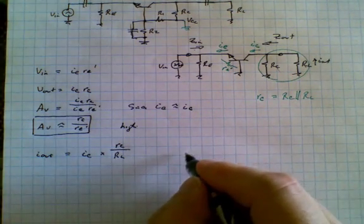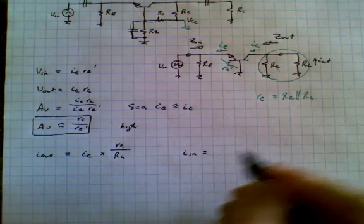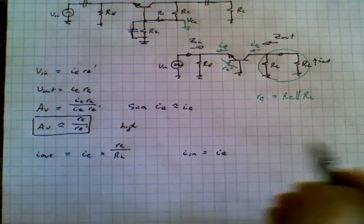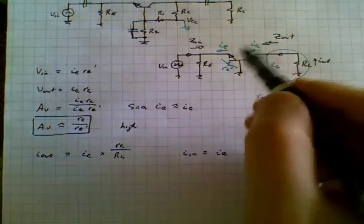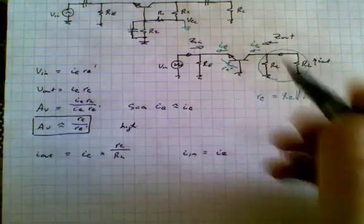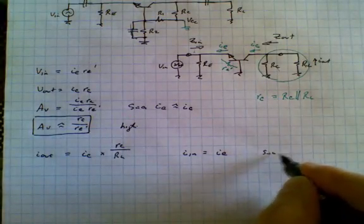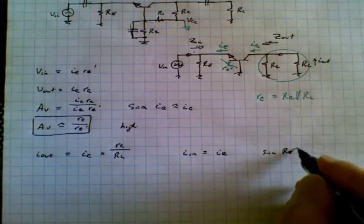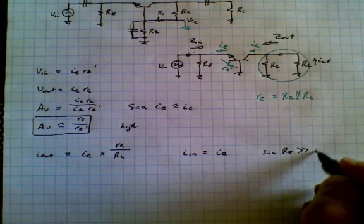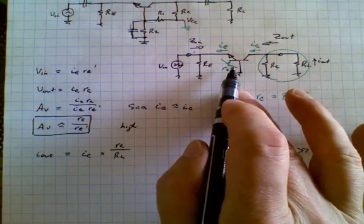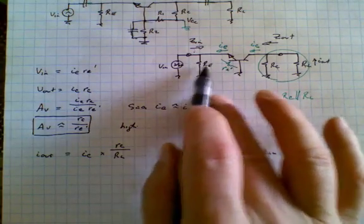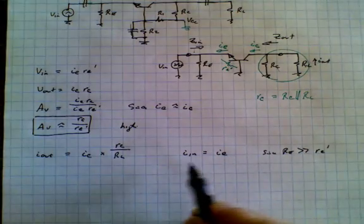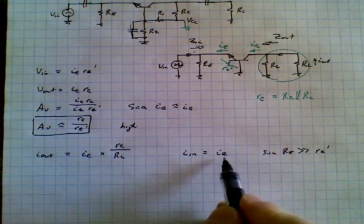Now the input current, IN, is equal to IE. Now the reason we can say it's IE and not the current over here is because RE, this large RE over here, is much, much greater than RE prime, this resistor over here. So the net result is this virtually disappears from the analysis. And so we're left with IE.